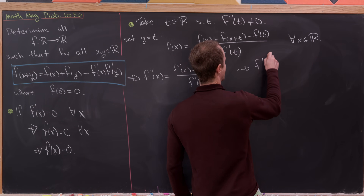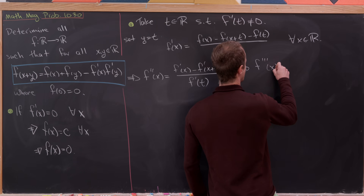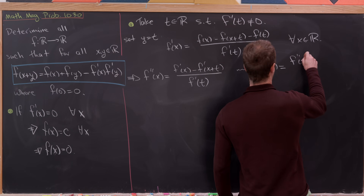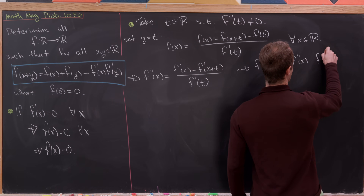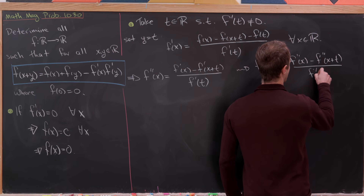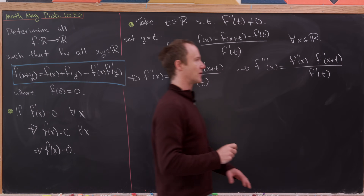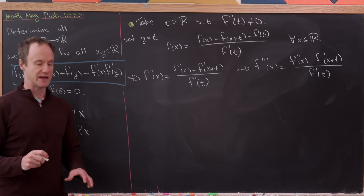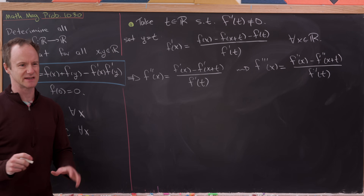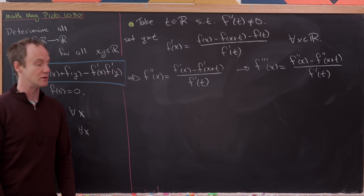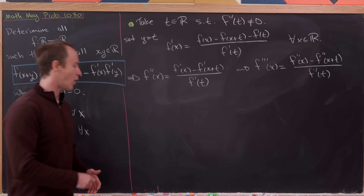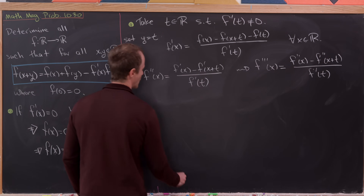So on and so forth — for example, f'''(x) = [f''(x) - f''(x+t)] / f'(t). The important thing is that all of the derivatives exist, making this a so-called smooth function.